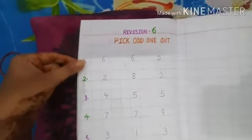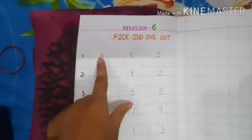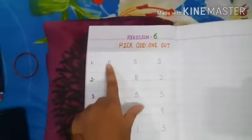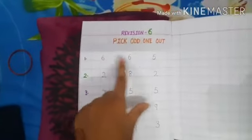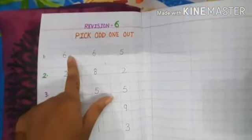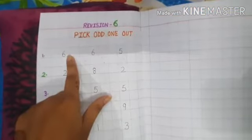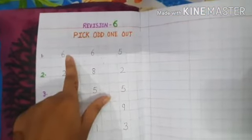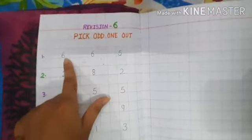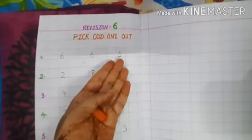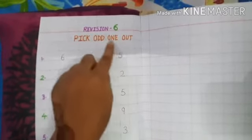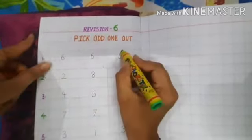First: numbers 6, 6 and 5. Both 6s are brothers — they are the same. But 5 is not. So you have to circle number 5.